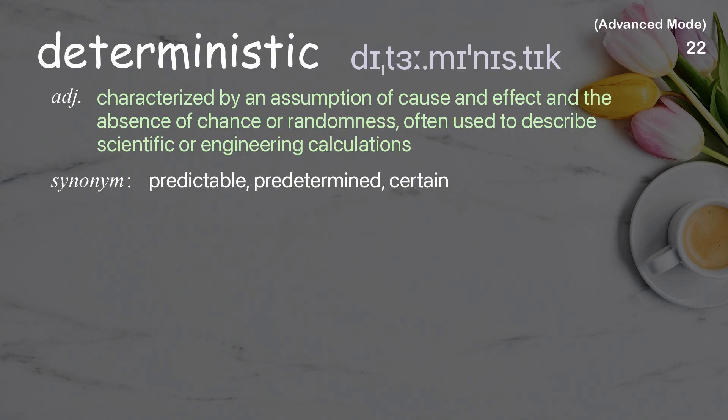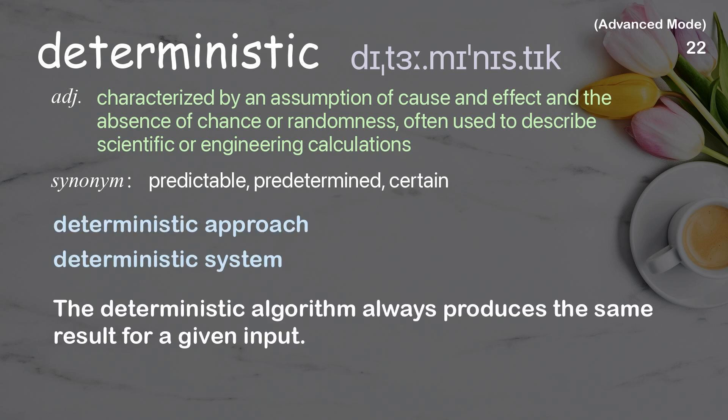Deterministic: characterized by an assumption of cause and effect and the absence of chance or randomness; often used to describe scientific or engineering calculations. Examples: deterministic approach, deterministic system. The deterministic algorithm always produces the same result for a given input.